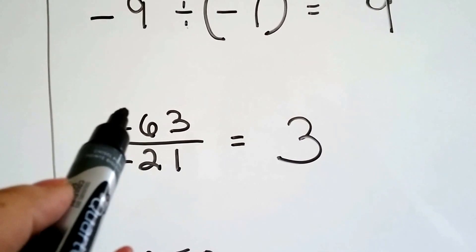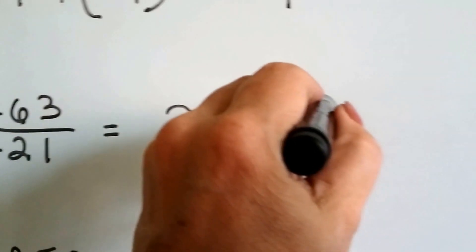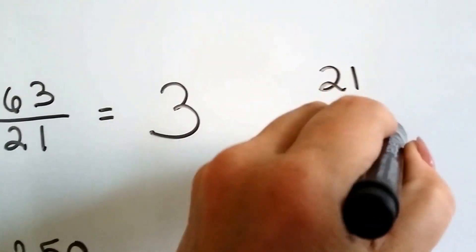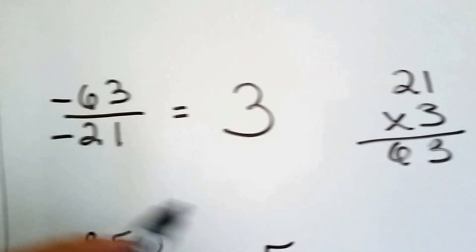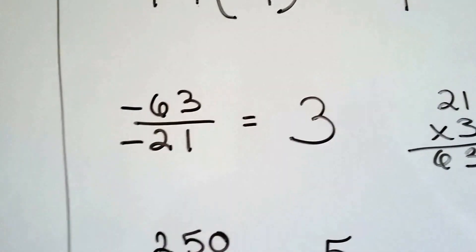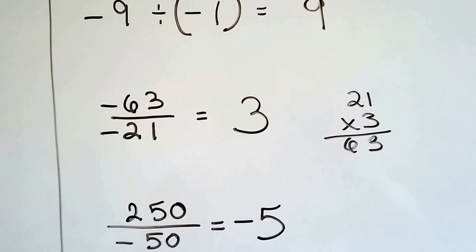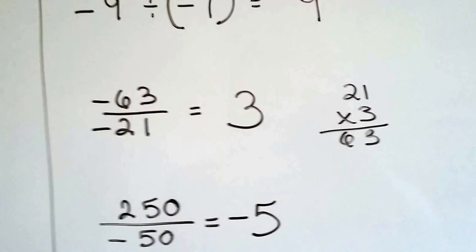And then for this one, negative 63 divided by negative 21. Well, 21 times 3 equals 63. And because they're both negative signs, they're like, we're going to make it a positive 63. Because a negative 21 can fit into that negative 63 three times. See?